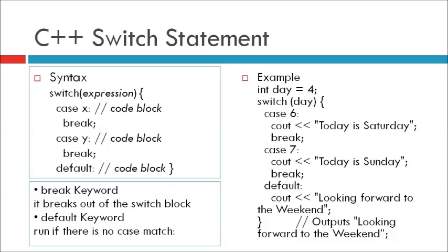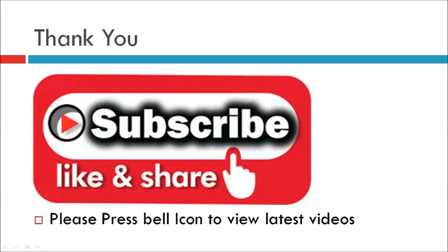When a match is found and the job is done, it's time for a break — there is no need for more testing. A break can save a lot of execution time because it ignores execution of all the rest of the code in the switch block. The default keyword specifies code to run if there is no case match. Example: integer day = 4; switch (day) { case 6: cout << 'Today is Saturday'; break; case 7: cout << 'Today is Sunday'; break; default: cout << 'Looking forward to the weekend'; }. Since day equals 4, there is no matching case, so output is 'Looking forward to the weekend'. Please like, share, subscribe, and press the bell icon for latest videos. Thank you.